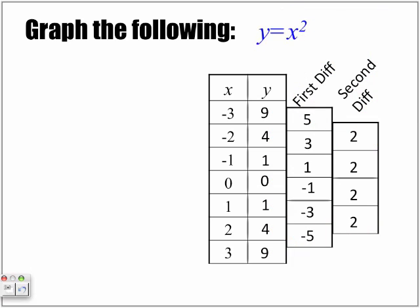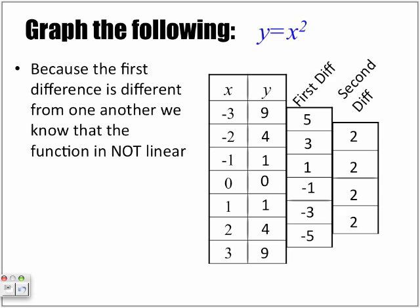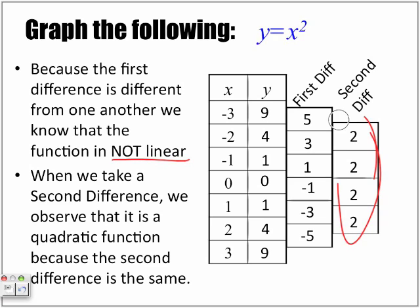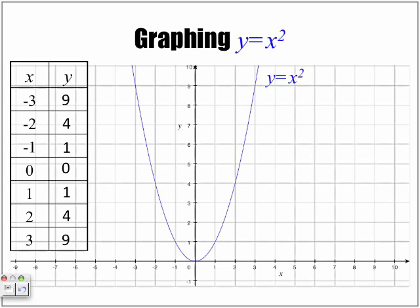Let's recap: because the first differences are different from one another, we know the function is not linear. When we take the second difference, we observe they are all the same, which is what makes it quadratic. Now let's take these values and graph the expression y equals x squared. Here is what we get.